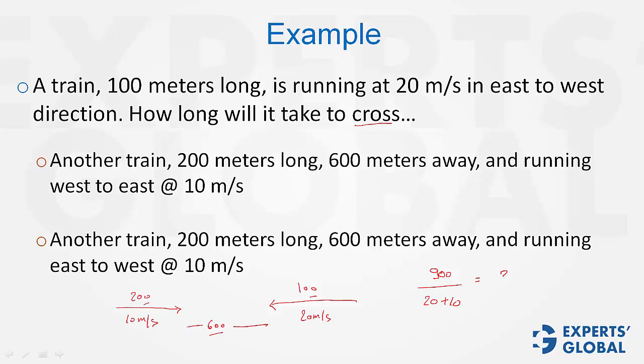In the second question, everything is the same except that the second train is moving in the same direction as the first train. Therefore, the distance to be covered is still 900 meters. However, the relative speed would be the difference of the two speeds, 900 upon 20 minus 10. This answer would be 90 seconds.